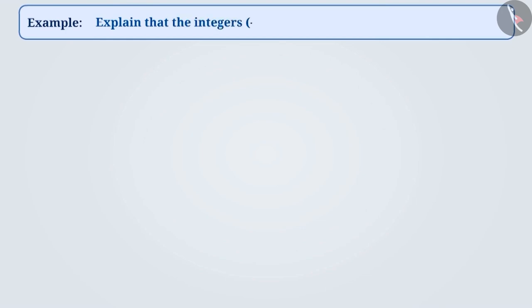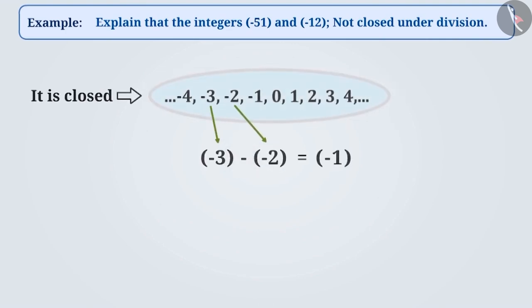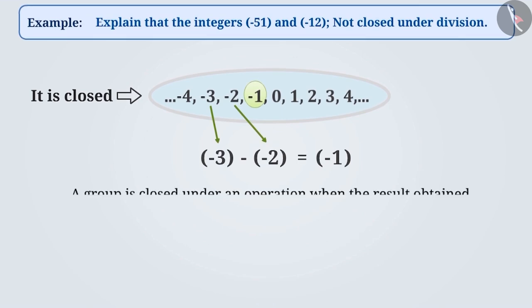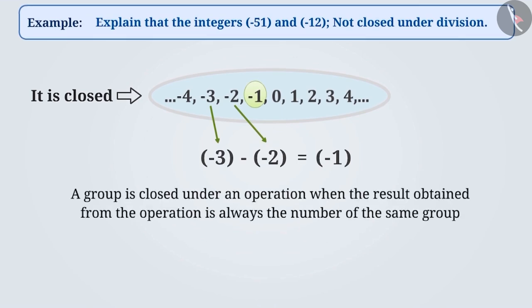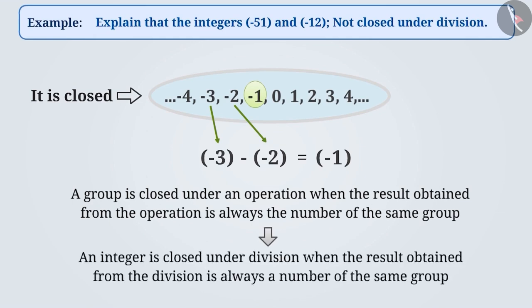Next example: explain that the integers minus 51 and minus 12 are not closed under division. A group is closed under an operation when the result obtained from the operation is always a number of the same group. Therefore, we can say that integers are closed under division when the result obtained from the division is always a number of the same group.